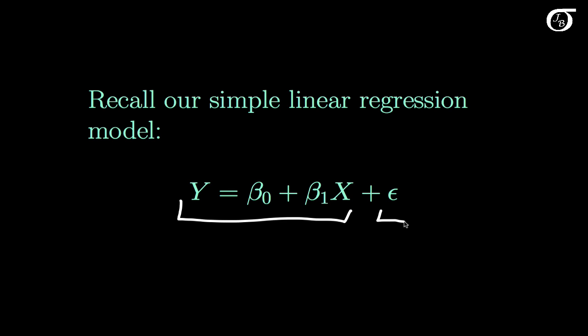Epsilon is a random error component, representing the fact that the y's have some variability and are randomly distributed about that line. To do any statistical inference, we needed to make some assumptions about that random error term epsilon.